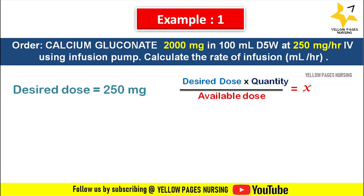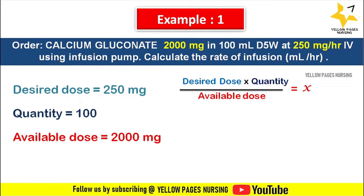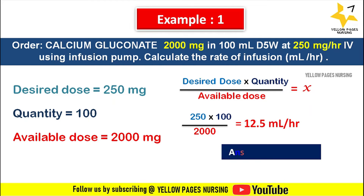Here the desired dose is 250 mg, quantity is 100, and available dose is 2000 mg. Applying all values in the formula we get: 250 multiplied by 100 divided by 2000, which gives 12.5 ml per hour. And hence we set 12.5 ml per hour in the infusion pump.